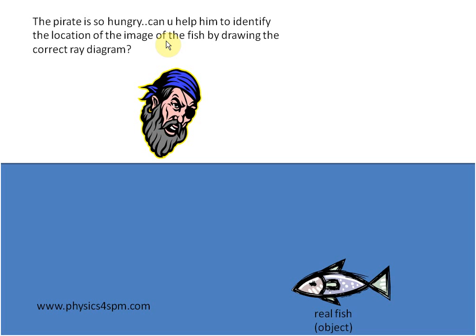Alright, so now what you have here is the real fish, or we call it the object. So the first step, what you're going to do is draw on top of the real fish an image about the same size of the fish. This is the image of the object that we have at the bottom.